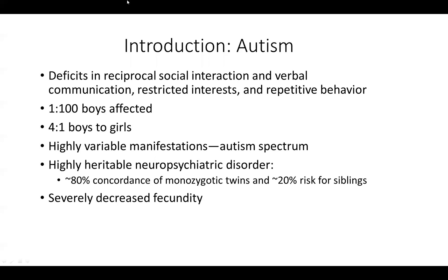One specific observation that quite clearly implicates genetics is that if you take monozygotic twins, about 80% of them will be comorbid for autism — meaning if you take a twin with autism, the other twin with 80% certainty will also have autism. Another very important feature that guided our scientific strategy to attack the genetics of autism is that kids with autism tend not to reproduce. People diagnosed with autism have over five times fewer children than a typically developing person.